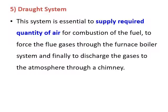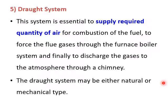The drought system is the system that controls the quantity of air required to maintain the pressure difference between the furnace and the outside atmosphere. This drought system is either natural or mechanical. If it is a natural system, the chimney height must be very high; if it is a mechanical system, the chimney height can be reduced.